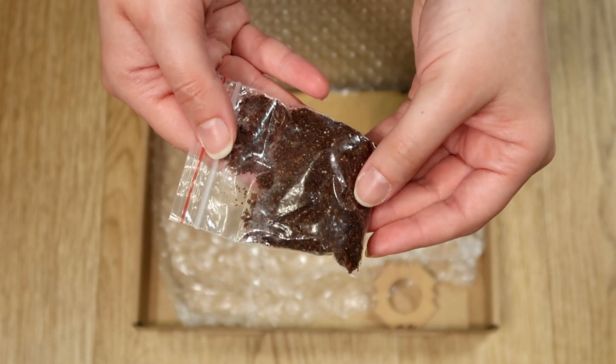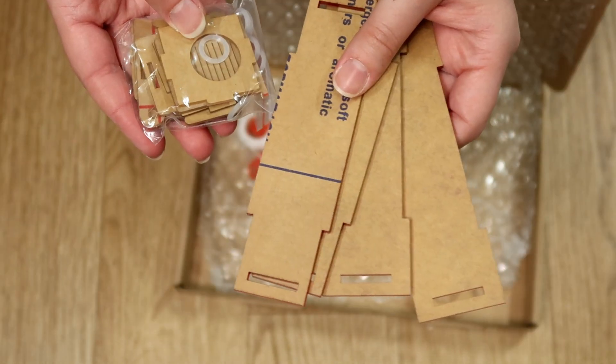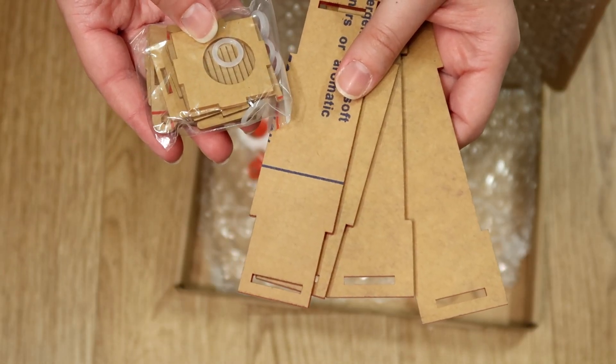Then we have a tube of seeds because she is a harvester ant and they do like to collect seeds. Then this looks like a bit of dirt. I'm sure I need to read the instructions for this and I think we need to build this so let's get to it.